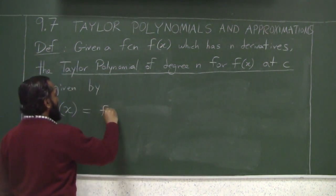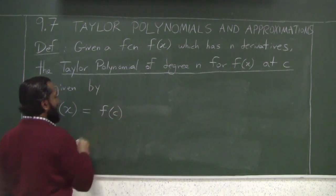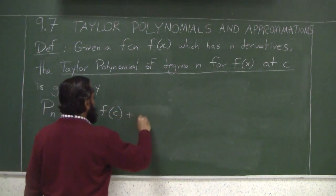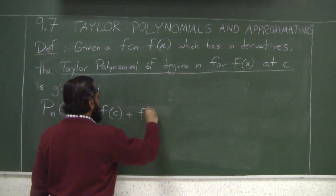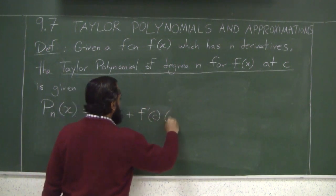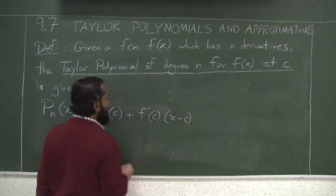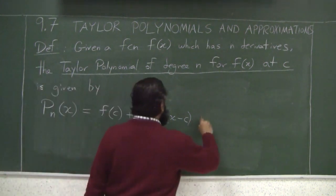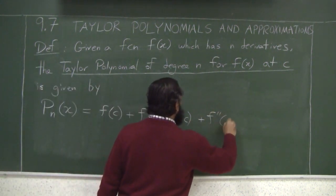a_0 is just the value of the function f(c). Plus the first derivative of the function at c times (x minus c). Plus the second derivative of the function at c.